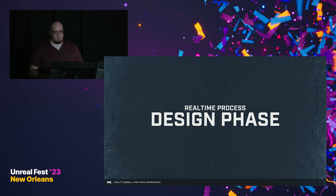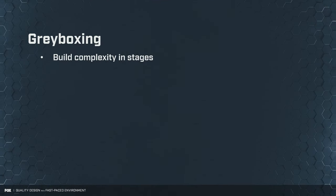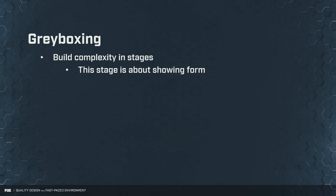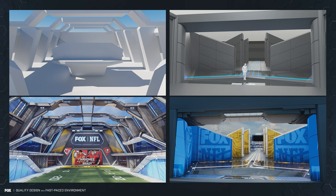So now this gets to our design process, and the very first part is gray boxing. Each stage has a very particular intent, and with gray boxing we're building complexity in stages. This stage is all about showing form — not trying to show the final thing, but figuring out what the space is going to be. I want to keep things rough, focus on shape and silhouette. You can see a before-and-after from our gray boxing to the final inside Unreal.